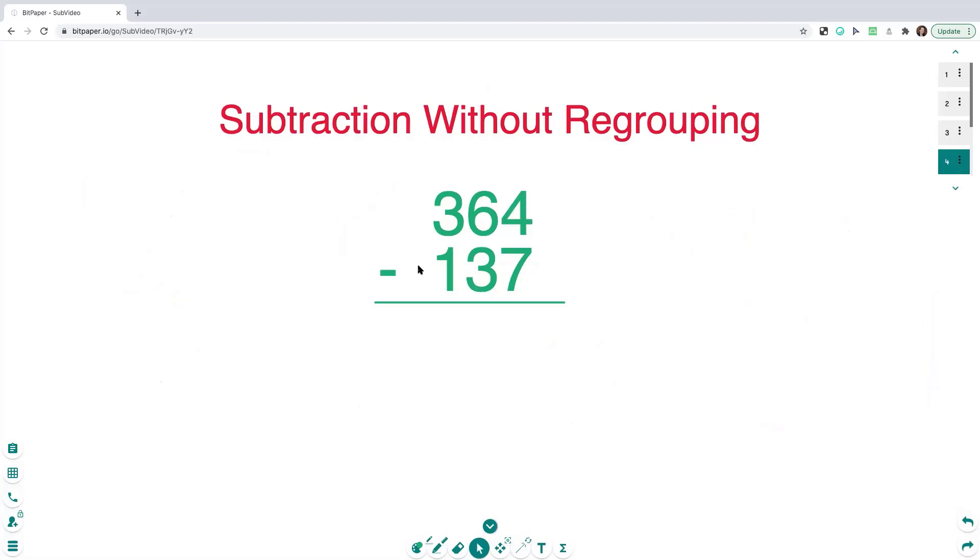Let's go ahead and go to our next problem. So we have 364 minus 137. We're going to start over here in the hundreds, and you can review the value of each digit as you go. So what's the 3 worth? 3's in the hundreds, so it's worth 300. And we're going to subtract the 1, the 1's in the hundreds, so it's worth 100. The difference between 300 and 100 is 200. So so far our answer is 200.